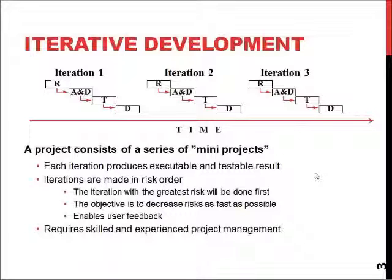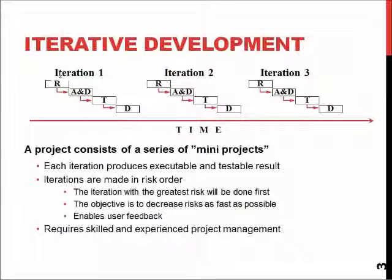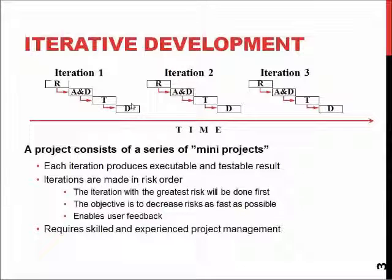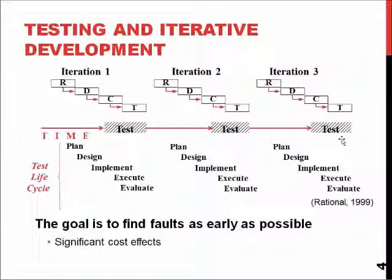In iterative development, one project consists of a series of mini projects. During each iteration — represented by a small waterfall cycle — we do requirements gathering, analysis and design, development, testing, and review on how the project is working and what we should do. The 'D' here means deployment, but it actually means that when we are satisfied with one iteration, we move forward to the next. After N iterations, we are done with the project.